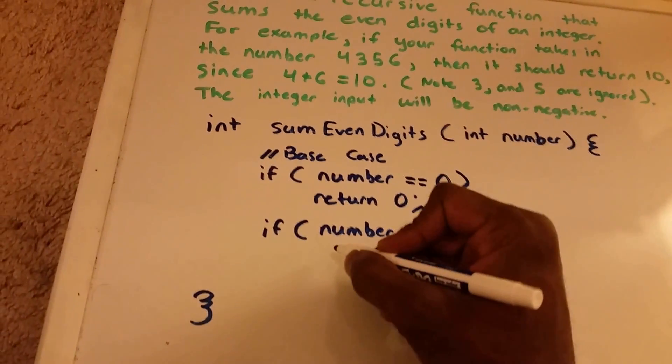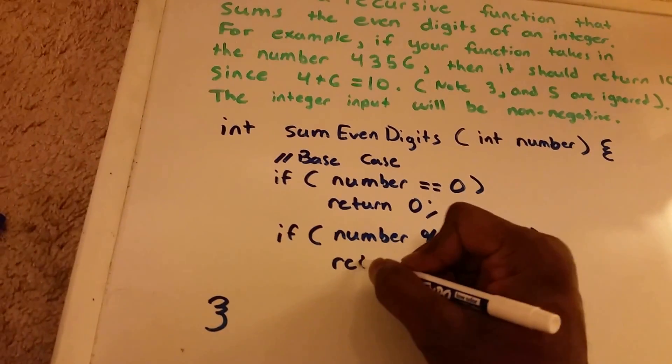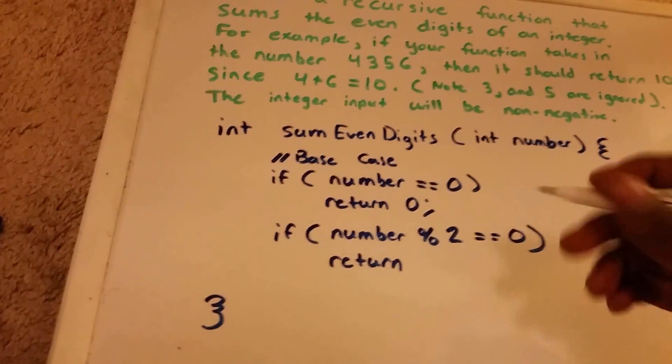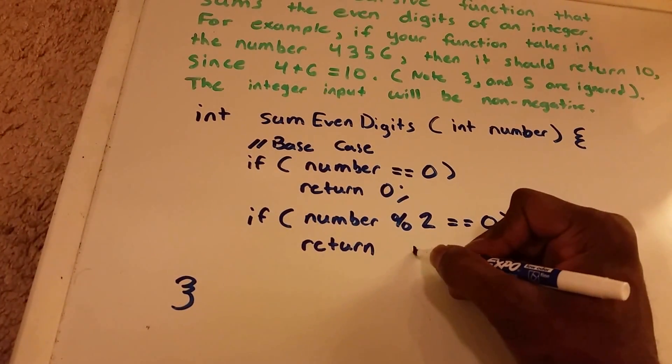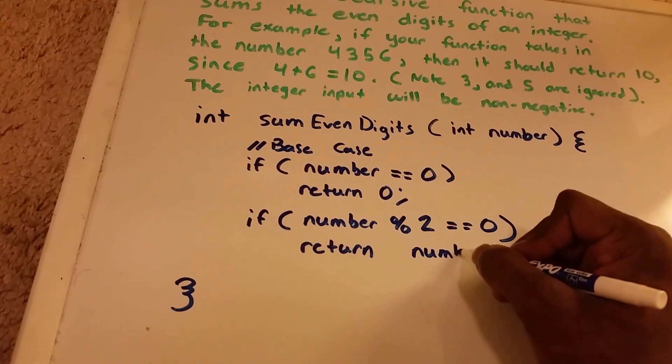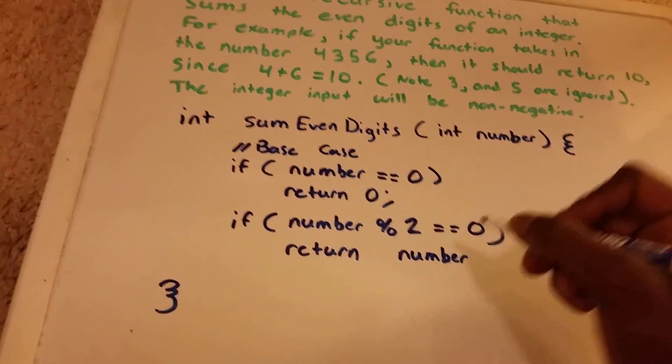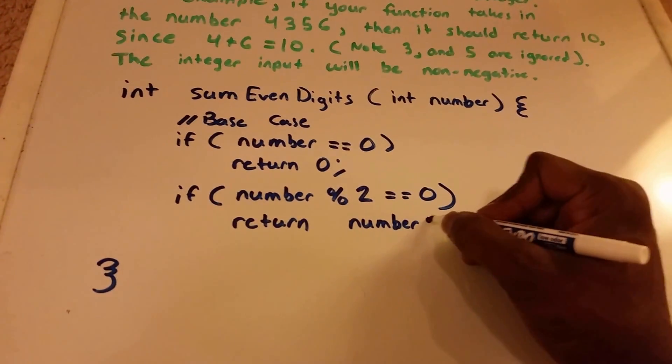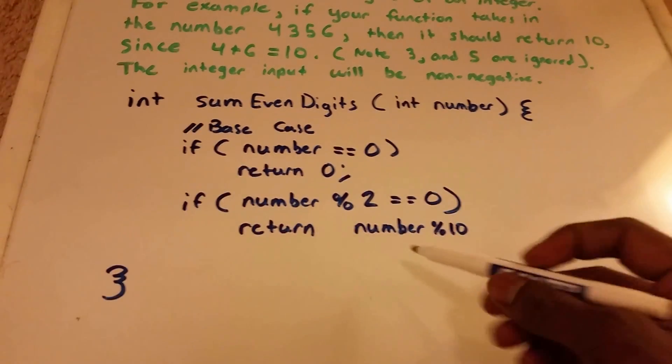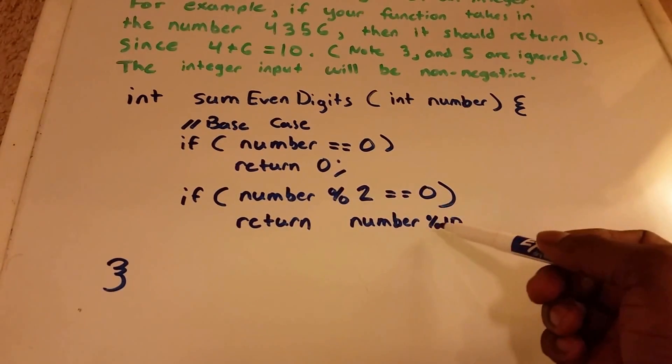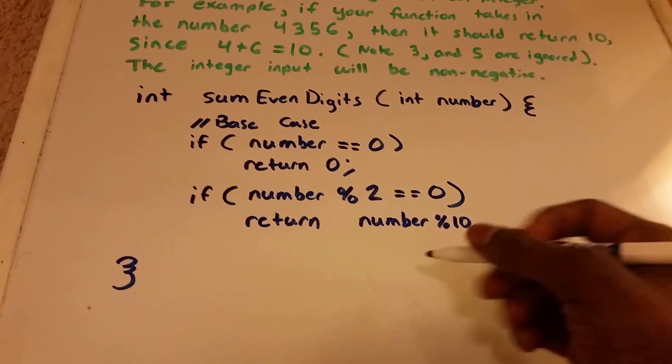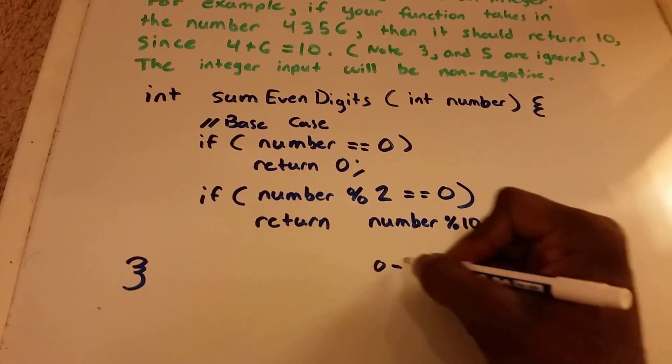So what do we want to do if it's even? Then we're going to want to return that number mod it by 10. The reason why I'm modding it by 10 is because a number mod 10 will give us a number from zero to nine.